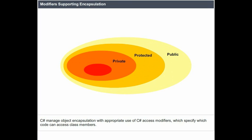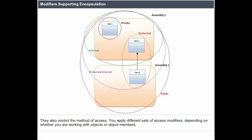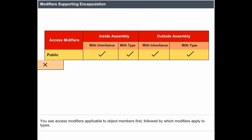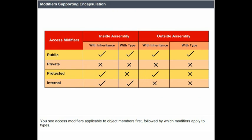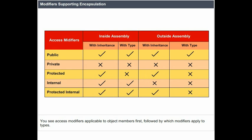C# manages object encapsulation with appropriate use of access modifiers, which specify which code can access class members. We also control the method of access. You apply different sets of access modifiers depending on whether you're working with objects or object members. Access modifiers applicable to object members are covered first, followed by which modifiers apply to types.